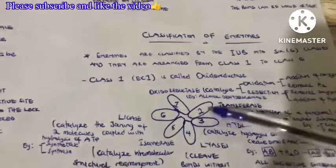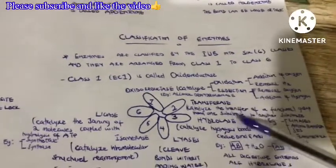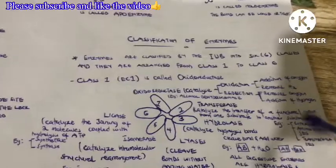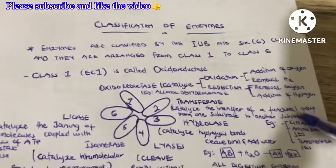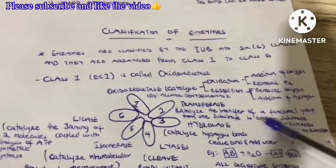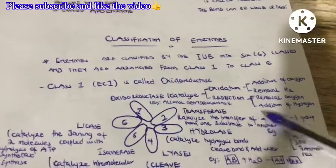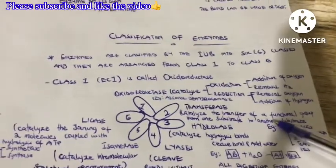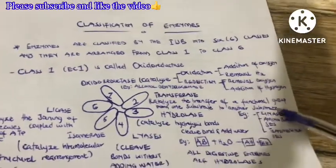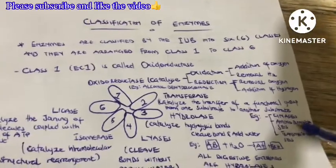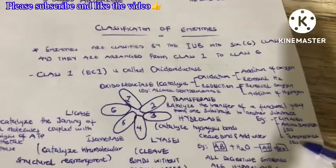The second class is called the transferase enzymes. They catalyze the transfer of a functional group from one substrate to another. They can transfer a methyl functional group, a carboxyl functional group, or a phosphate functional group. Examples include kinases, aminotransferases, and transmethylases.